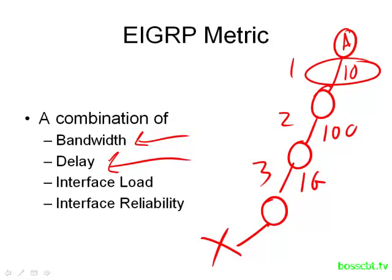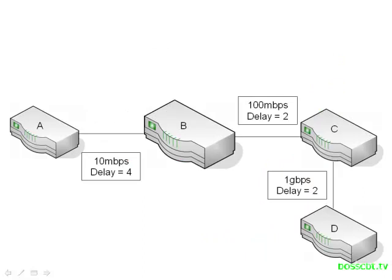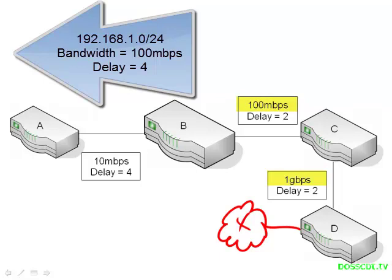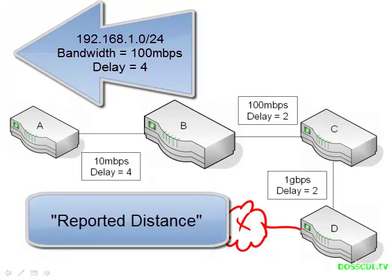So this is the metric — let's take a look at how it's actually used. In this diagram, router B is sending a route update to router A about a network that hangs off of router D. The two values included in that update are the bandwidth and the delay. The delay is pretty simple: we add up the delay of all of the links involved between router B and the destination. There are two links with values of 2 and 2, so the total delay is 4. For bandwidth, router B needs to state the lowest bandwidth link. It has a 100 megabit link and a gigabit link, so it puts in the 100 megabit link information. Those two factors are sent over to router A. This metric that router B sends over to router A has a very specific name in EIGRP — it is called the reported distance.